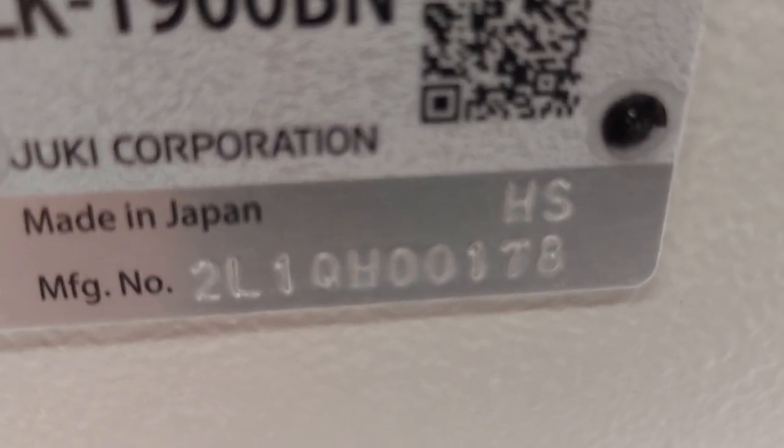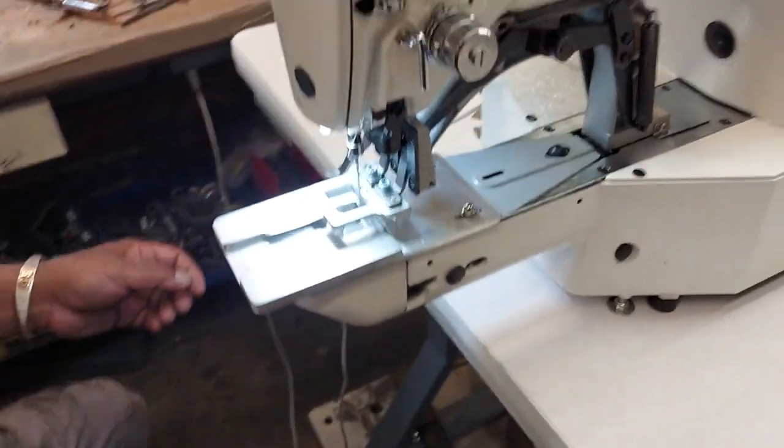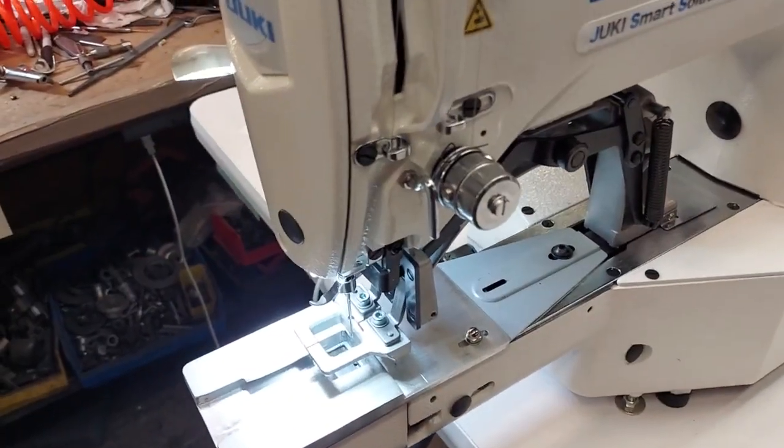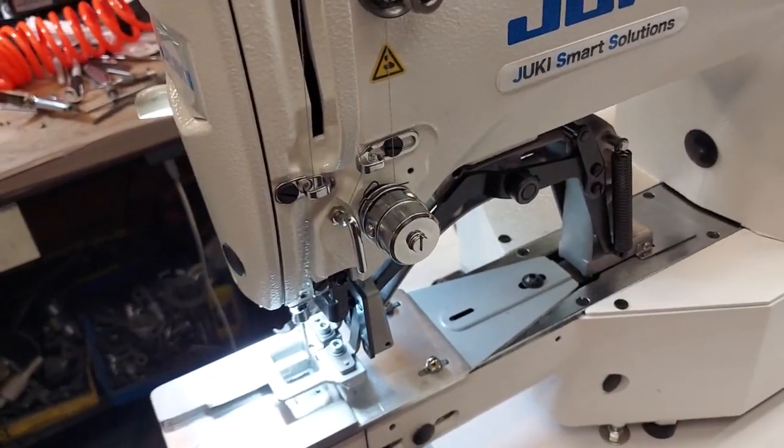This is an Ajuki LK1900 BN, serial number ending in 178, sewing a piece of velcro on a strap. The issue with this is that the strap is folded over on the edges.